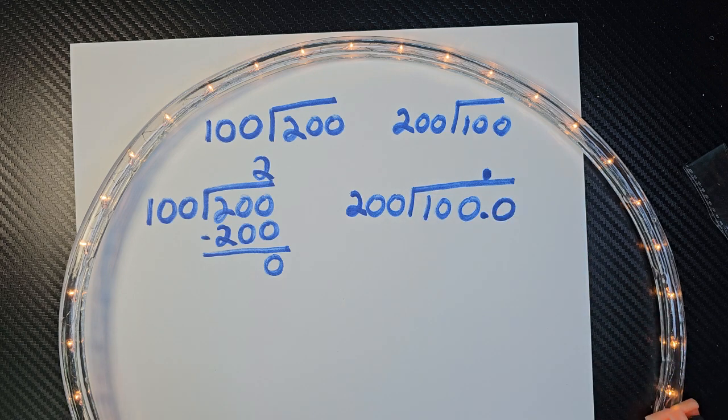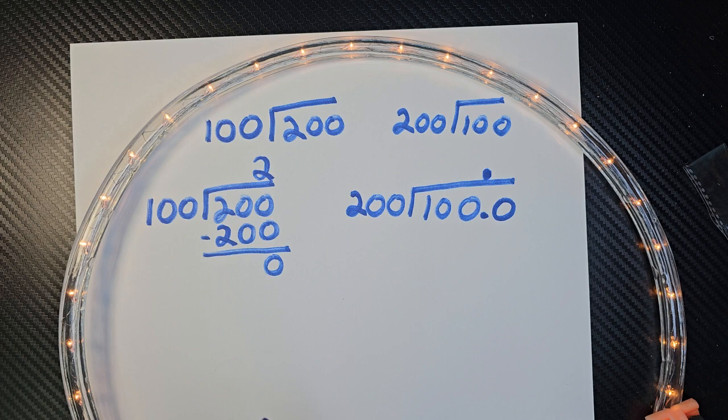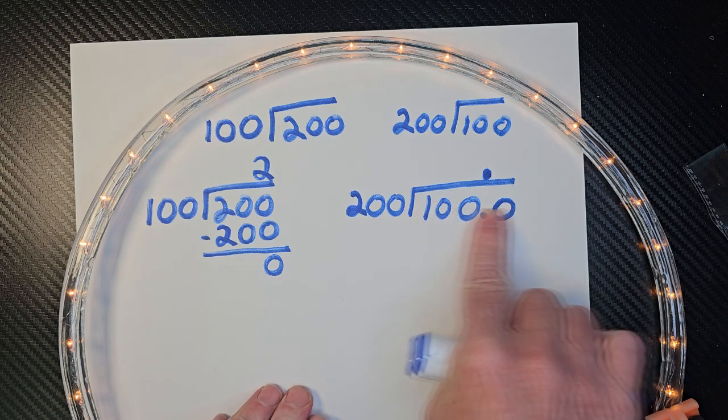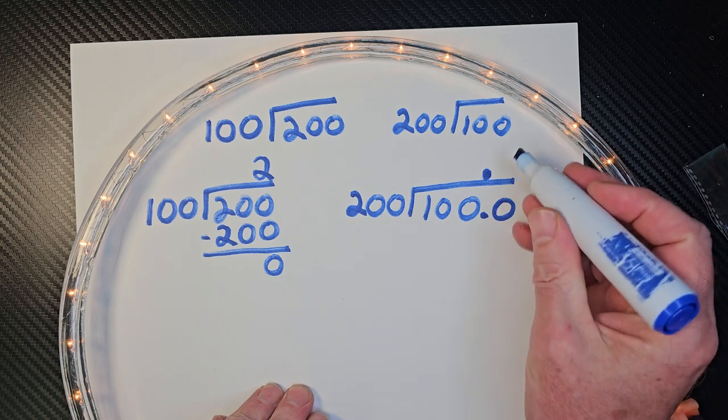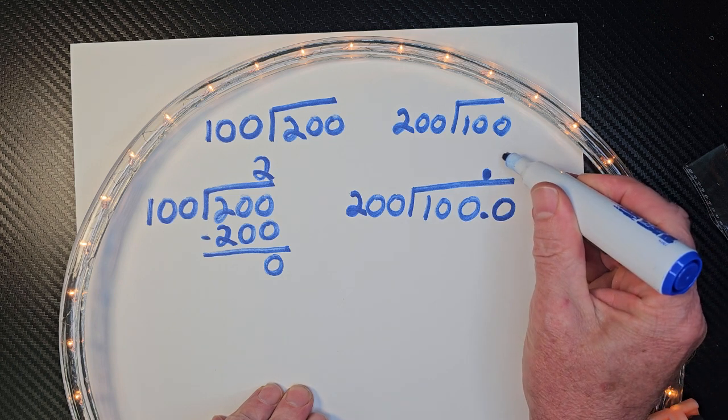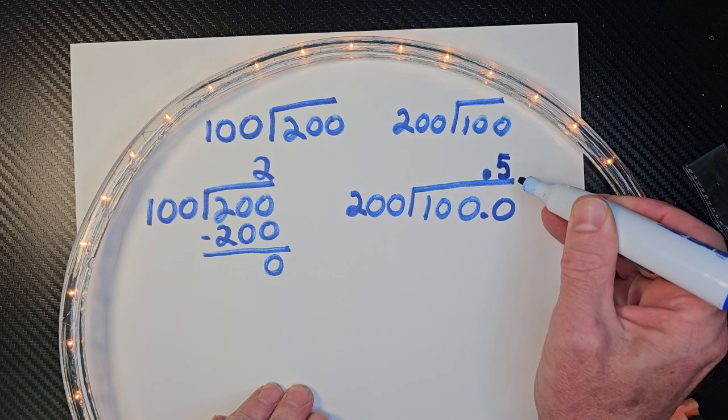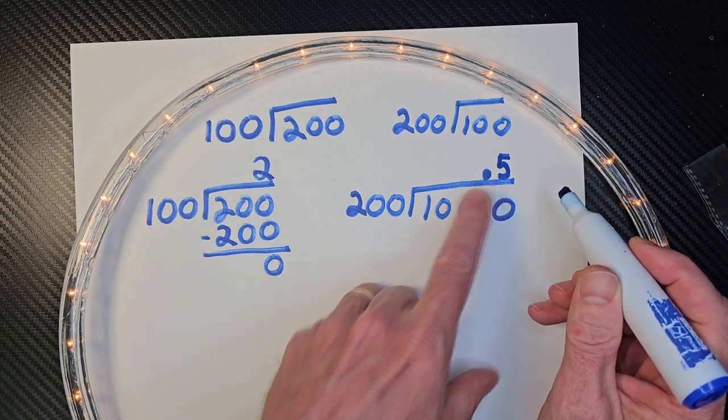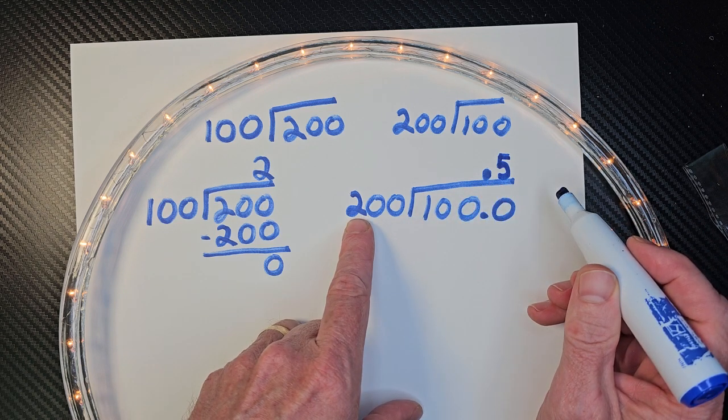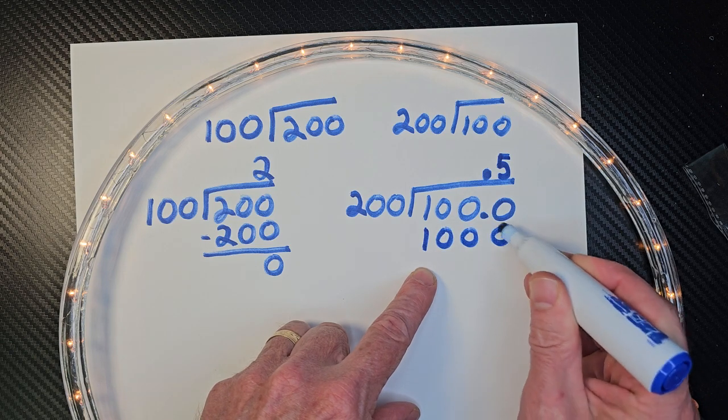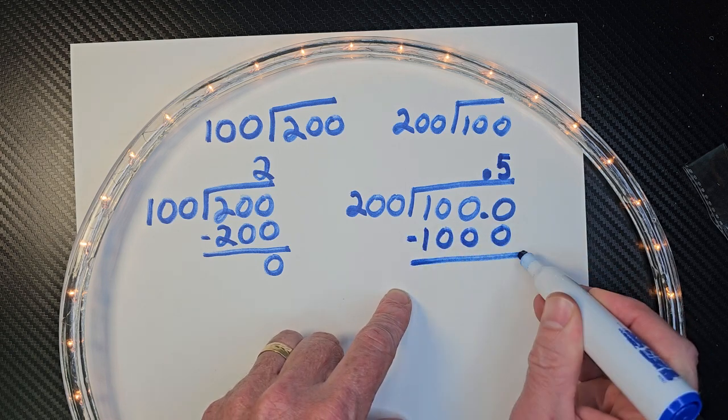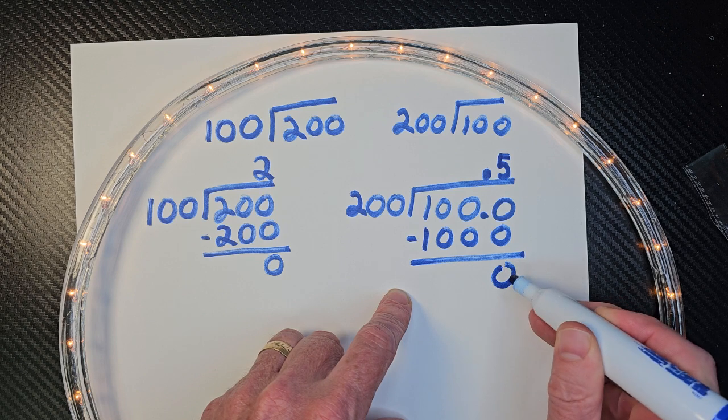So now, where do I put that five? We're dealing with this number right here, 1000. Okay, so I'm going to put that five right there. So now, five times 200 equals 1000. And you subtract that, and I have zero remainder.